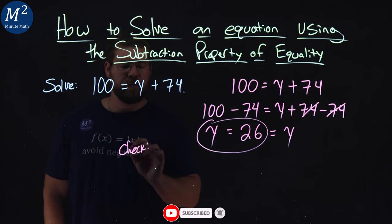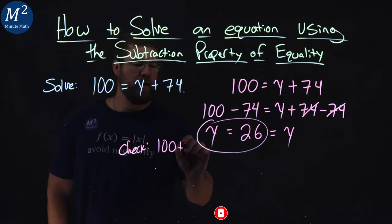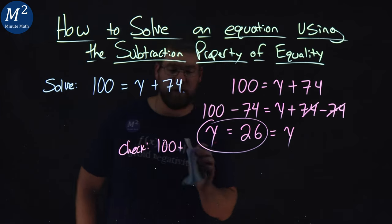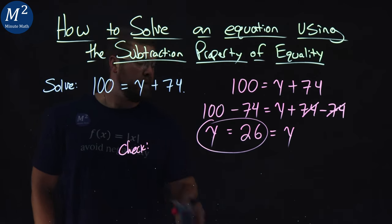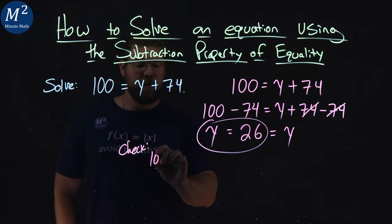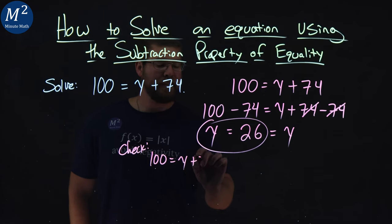How to check it. We rewrite our equation 100, not plus, equals, and I don't have any room there, so let me write a little lower here. 100 equals y plus 74.